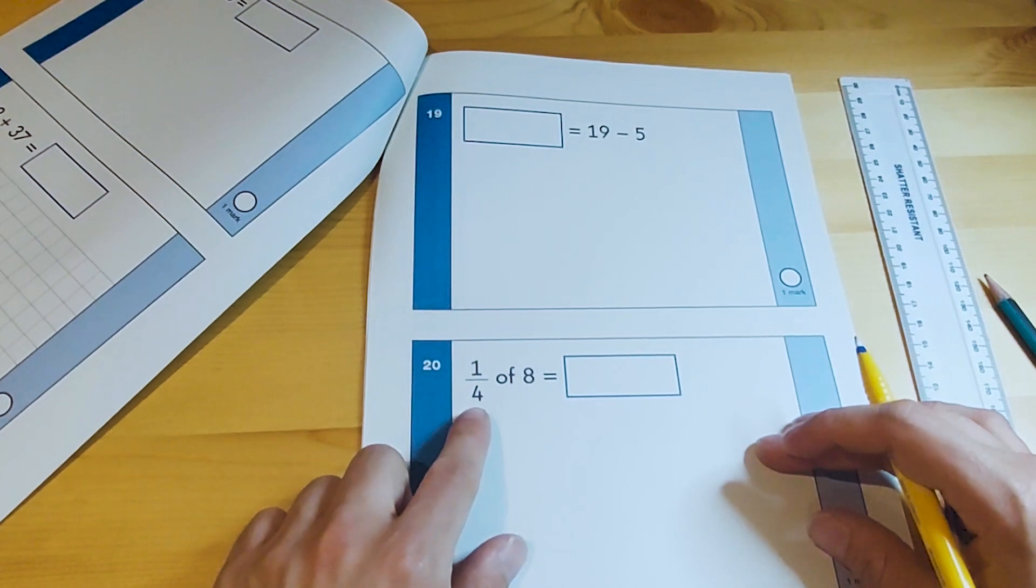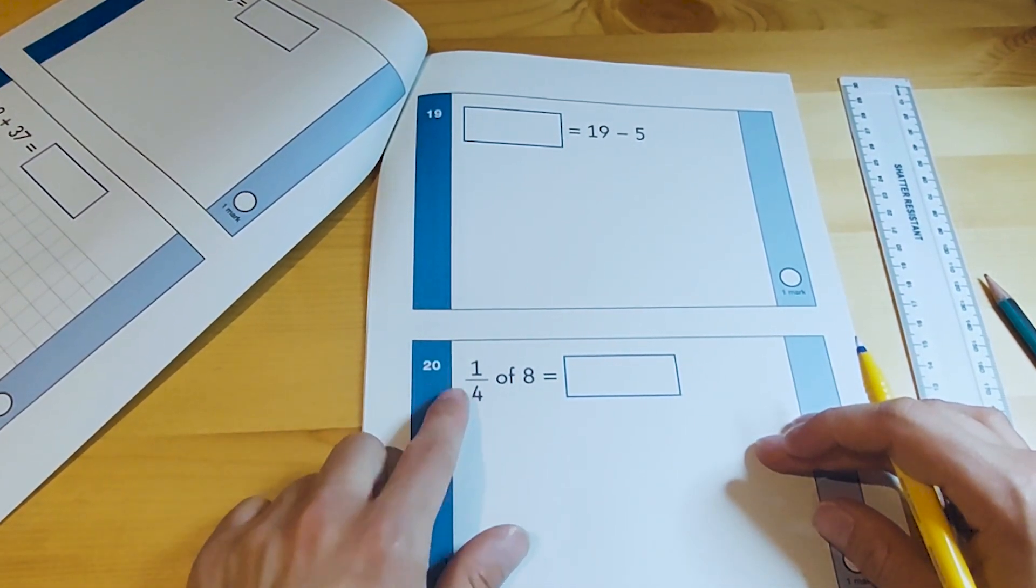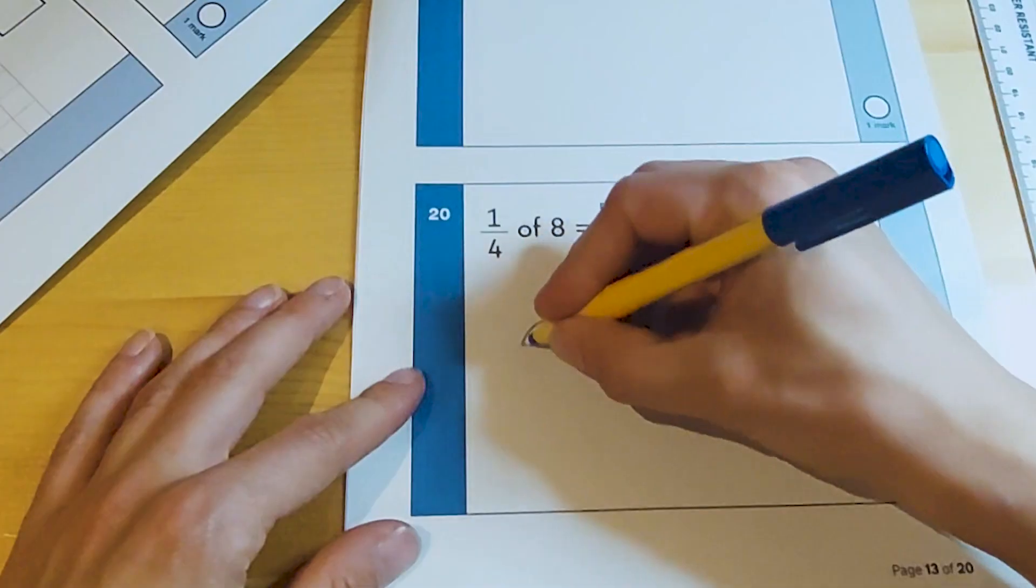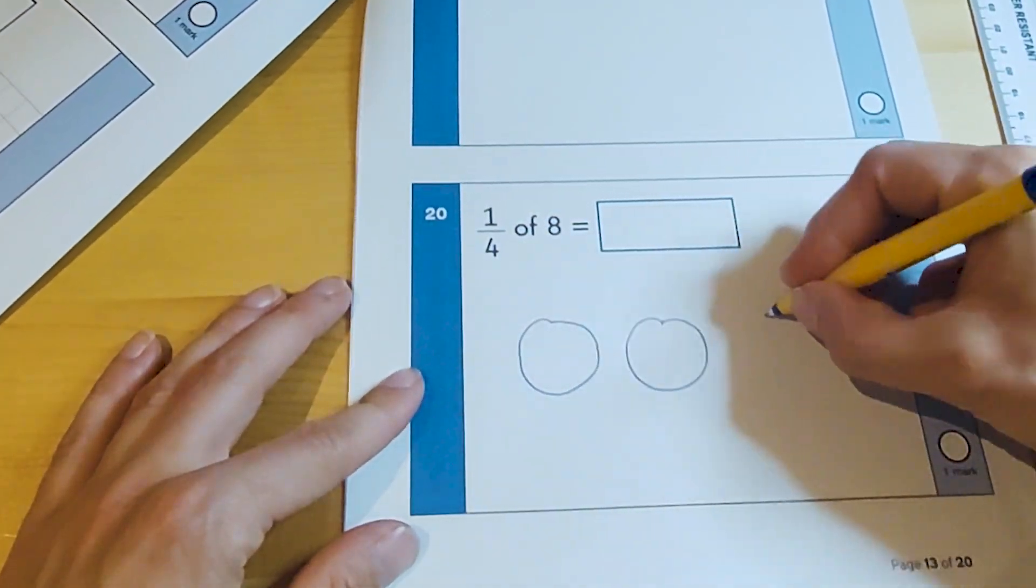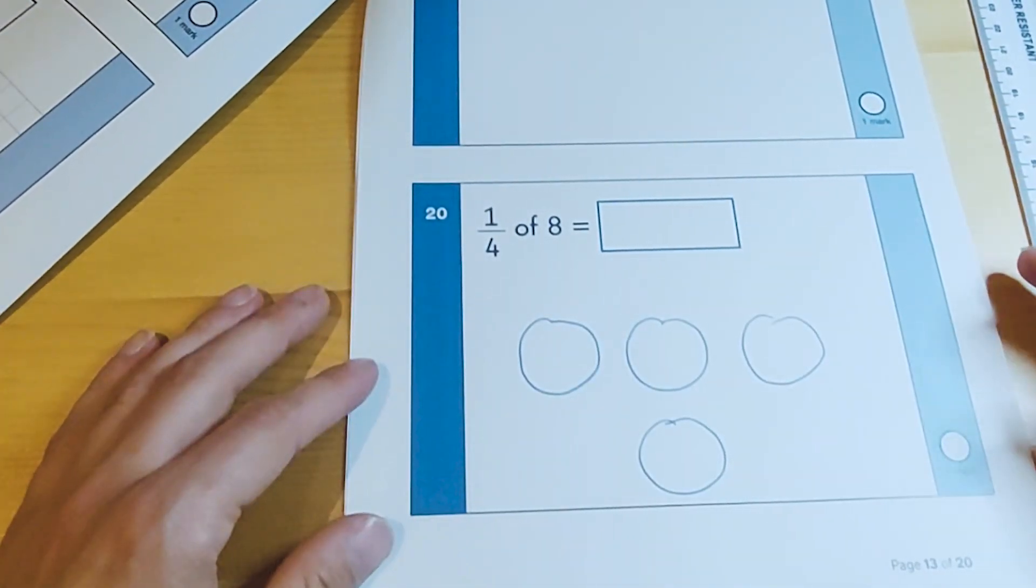I'm saying to the children that this 4 here is like sharing 8 between four people. We use the number at the bottom, the denominator, to draw four groups. This is what the child would do in the test.